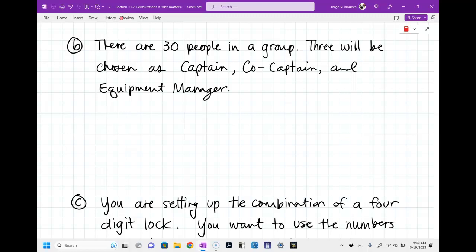So we have 30 people. We're going to choose three of them. We're going to permute three of them because the order does matter. So this is what you're going to write. 30 permute three. And then from there, you're just going to use your calculator.